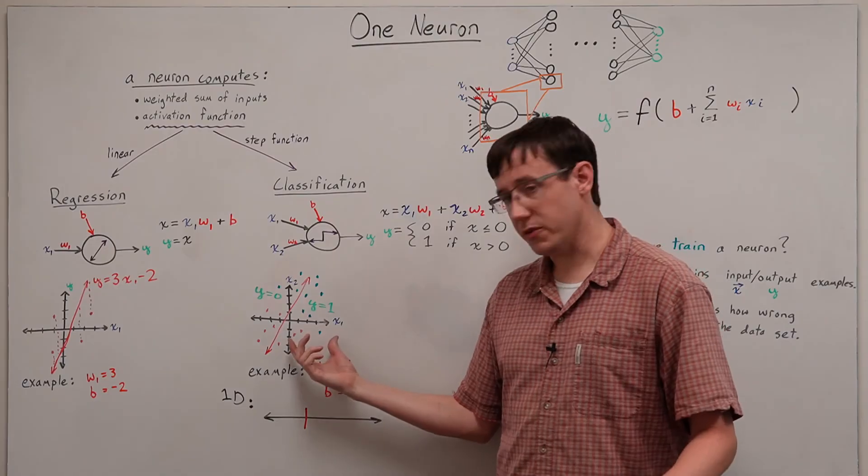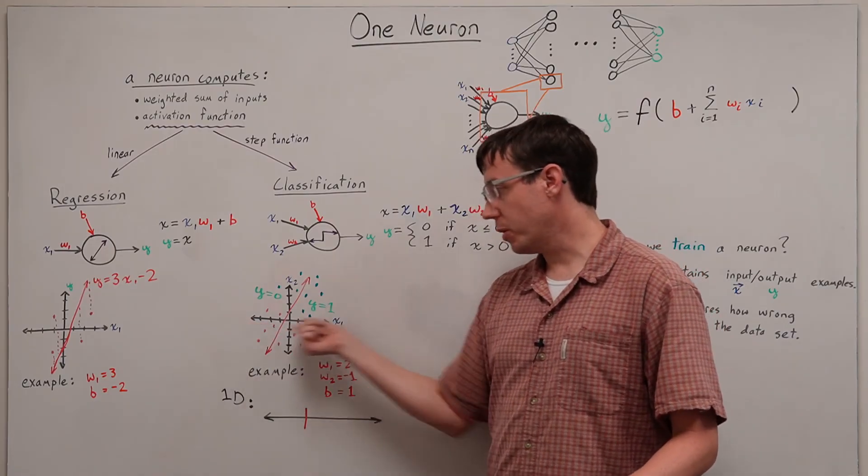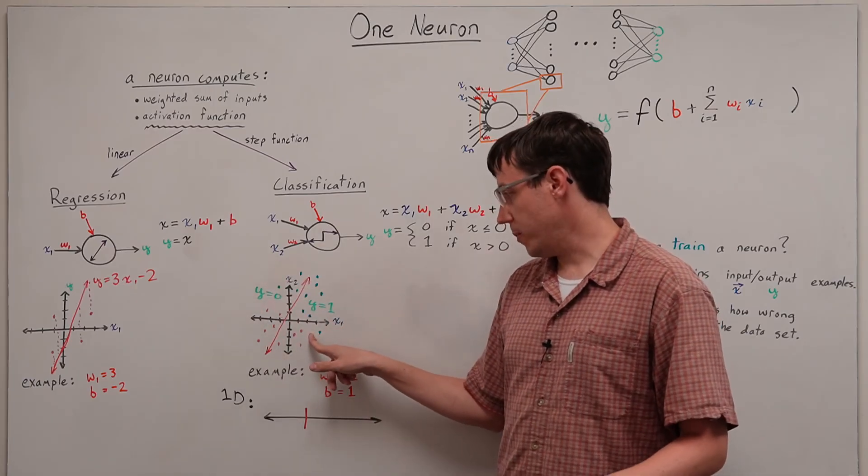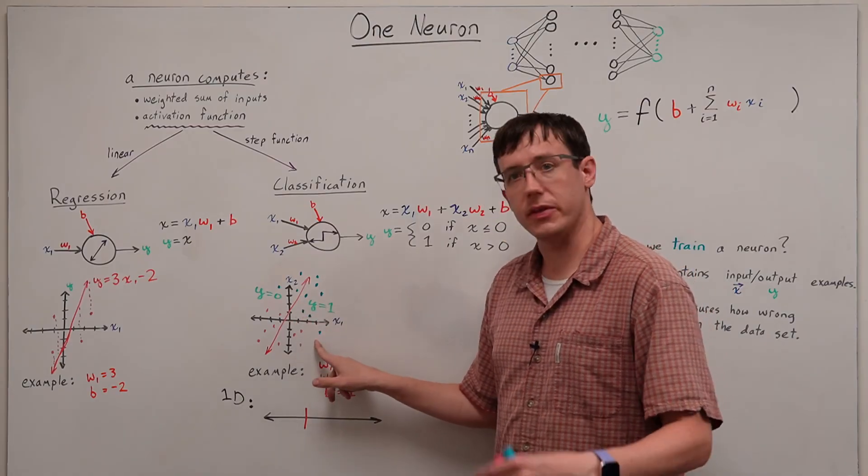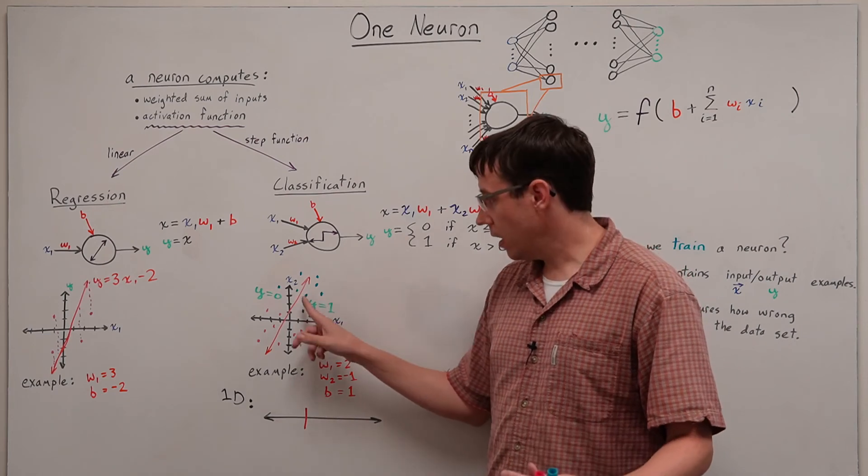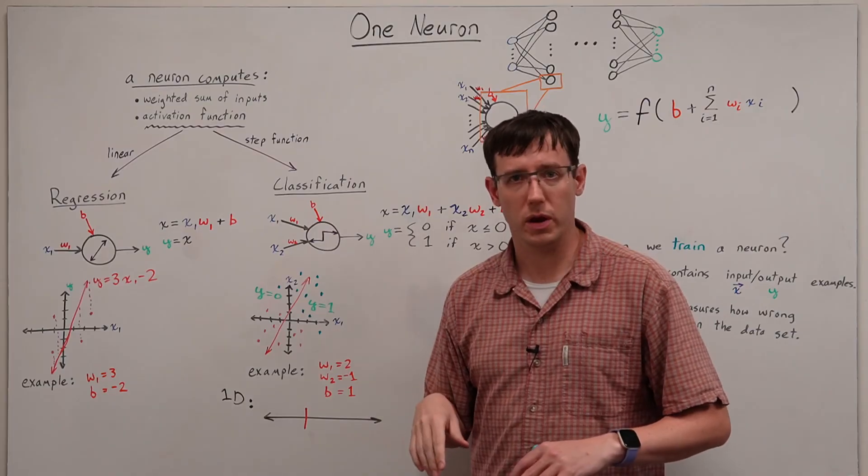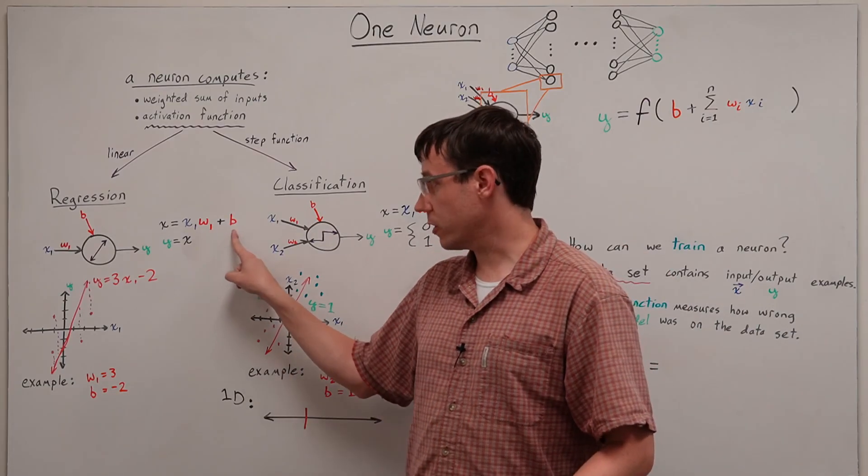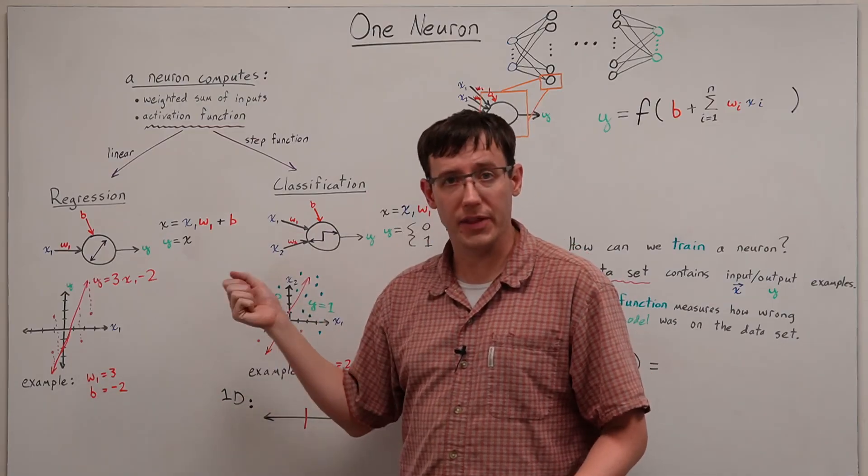For our classification example here, our input points have both an x1 and an x2 value, and then we can represent whether the label should be 1 or 0 by the color here. And so our model is wrong when it puts points on the wrong side of the decision boundary. So the goal of the loss function is to tell us, for the current parameter values, how wrong is the model on the data set.